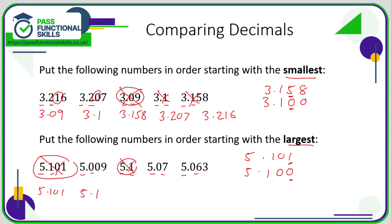So we need to look at the values in the hundredths column. We've got a zero, a seven, and a six. So seven is greater than six and zero, so five point zero seven comes next. Six is greater than zero, so five point zero six three comes next.